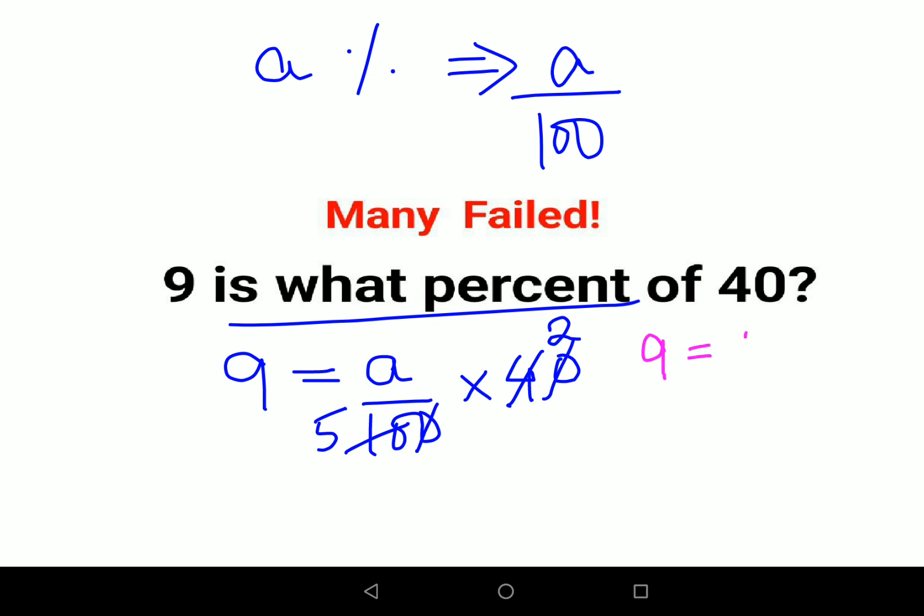Now in order to find the value of A, we need to multiply both sides by 5 and divide by 2, correct?